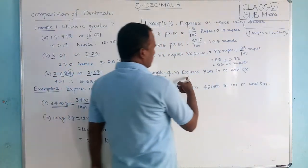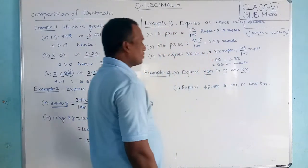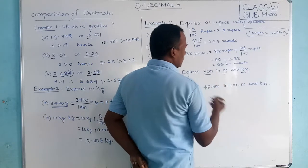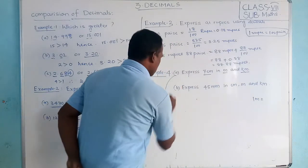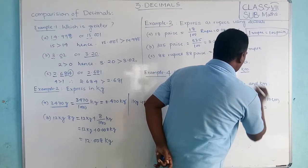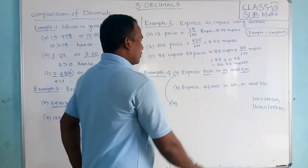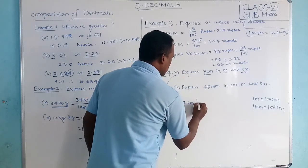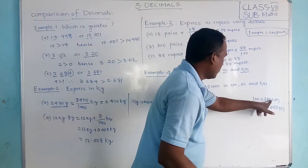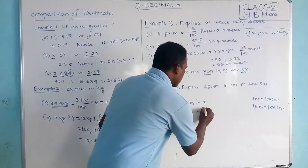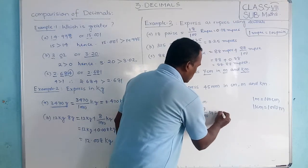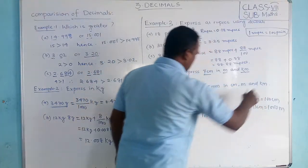Now, express 7 cm in meters and kilometers. We know 1 meter equals 100 cm, and 1 kilometer equals 1000 meters. To convert 7 cm to meters: 7 divided by 100 meters. There is 1 digit here, so 0.07 meters. That is 7 cm expressed in meters.